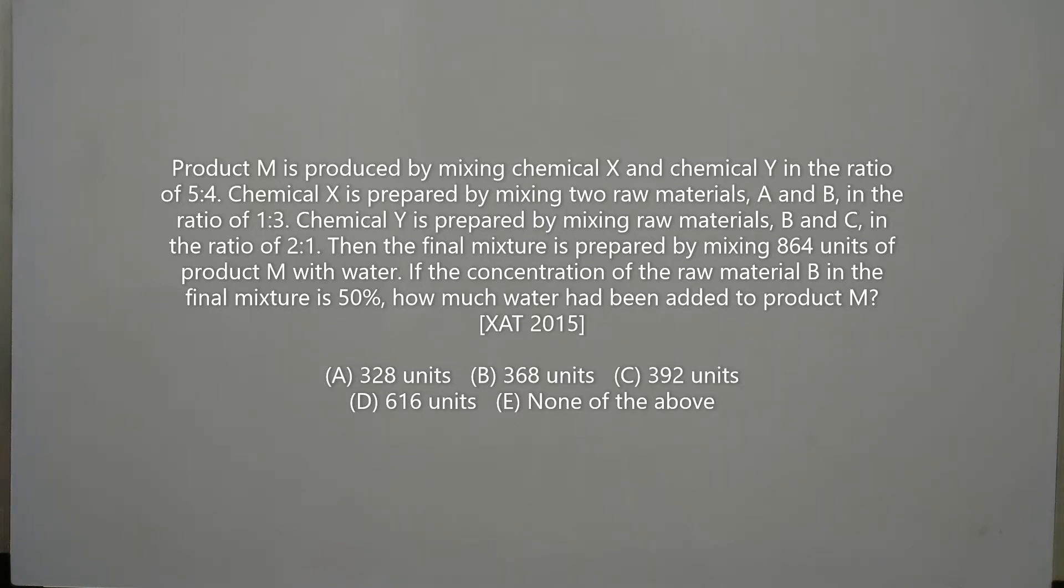Then the final mixture is prepared by mixing 864 units of product M with water. If the concentration of the raw material B in the final mixture is 50%, how much water had been added to product M?